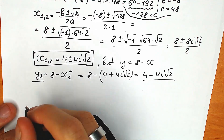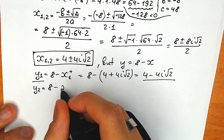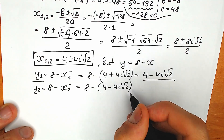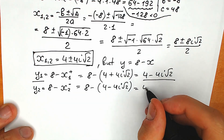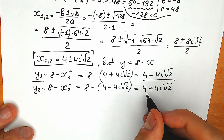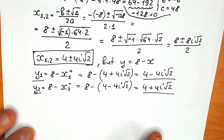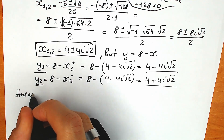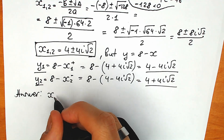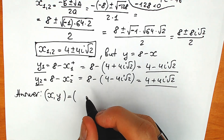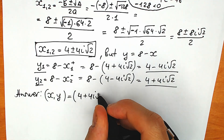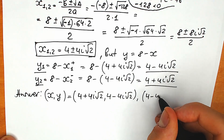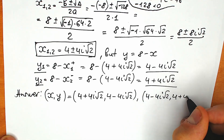And let's find y₂. So y₂ equals 8 minus x₂, using x₂ with the negative sign: 8 minus (4 minus 4i√2) gives us 4 plus 4i√2. This is our y₂. Now let's group all of these together and write our final answer. The first pair: x₁ = 4 + 4i√2, y₁ = 4 − 4i√2. The second pair: x₂ = 4 − 4i√2, y₂ = 4 + 4i√2.